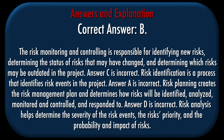Correct answer: B. Explanation: Risk monitoring and controlling is responsible for identifying new risks, determining the status of risks that may have changed, and determining which risks may be outdated in the project. Answer C is incorrect — risk identification is a process that identifies risk events in the project. Answer A is incorrect — risk planning creates the risk management plan and determines how risks will be identified, analyzed, monitored and controlled, and responded to. Answer D is incorrect — risk analysis helps determine the severity of the risk events, the risk's priority, and the probability and impact of risks.